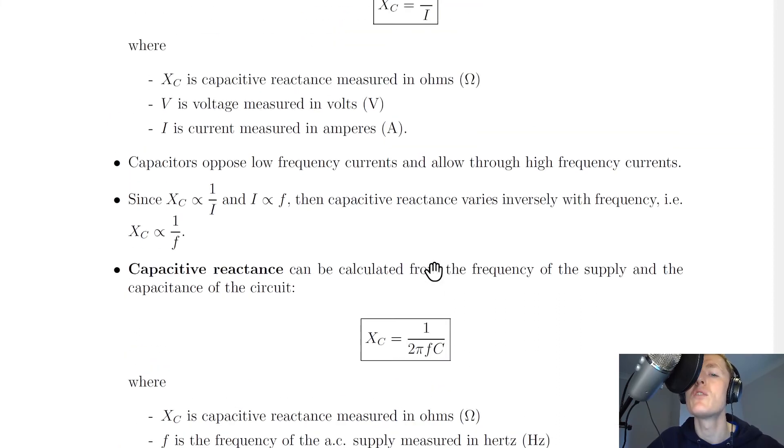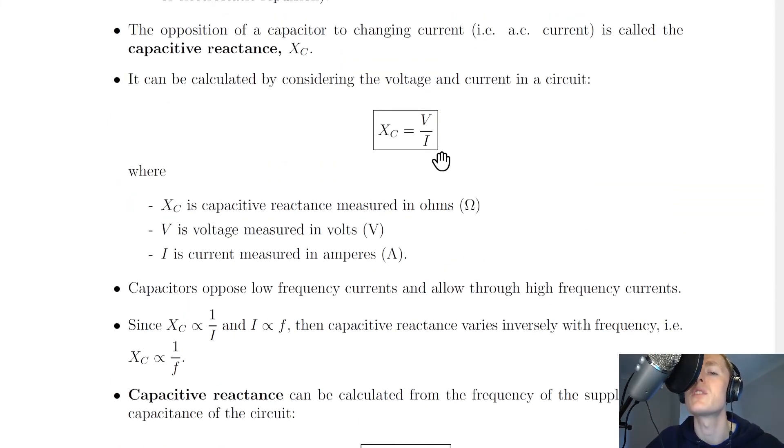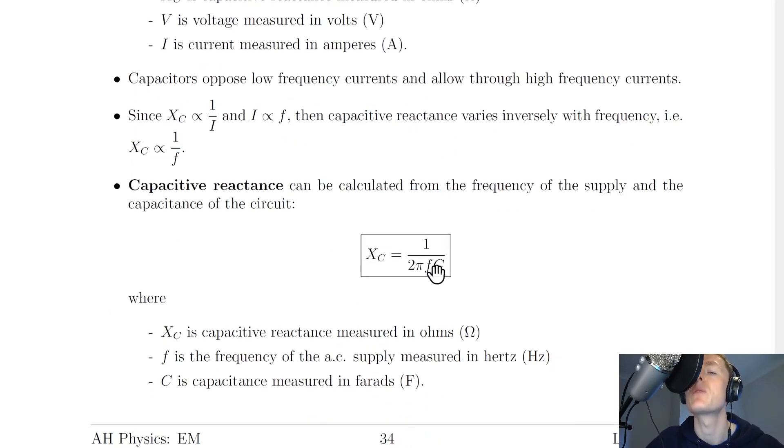So just to summarise, we have two relationships for capacitive reactance, one in terms of voltage and current, and one in terms of the frequency and capacitance.